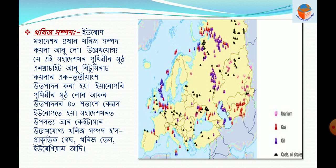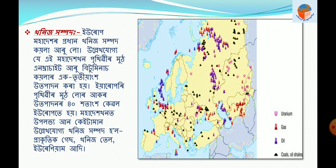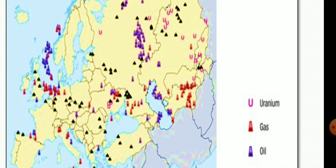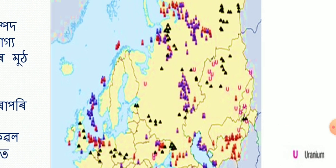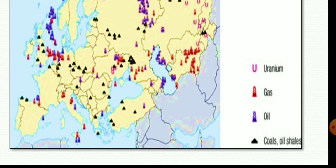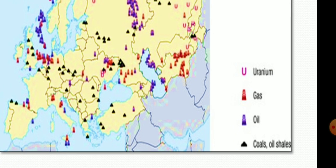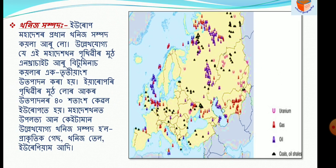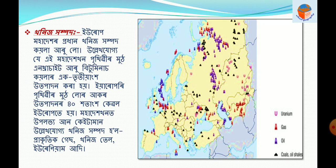On the map you can see: uranium, gas, oil, coal, iron ore. These are visible on the map. You can see them. Video posted in the next episode.